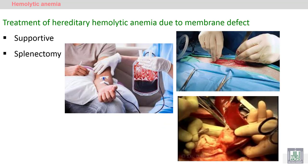How to treat the condition: supportive treatment is given by providing the patient with packed RBCs in order to correct the anemia, and splenectomy to relieve the destruction and improve the condition.